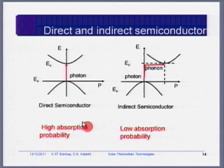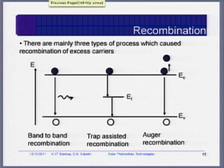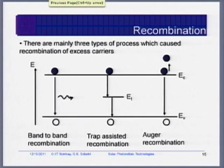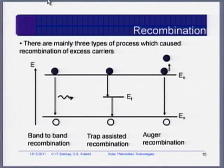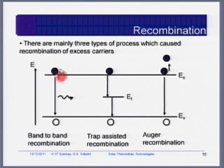High absorption probability occurs in direct band gap semiconductors; low absorption probability in indirect band gap semiconductors. Absorption results in generation of extra electron-hole pairs. But everything which goes to high energy can also come down. The excited electron, which went to a higher energy level by getting energy from a photon, can also come back down to the lower energy level and give away its energy. This process is called recombination, and we do not want recombination.